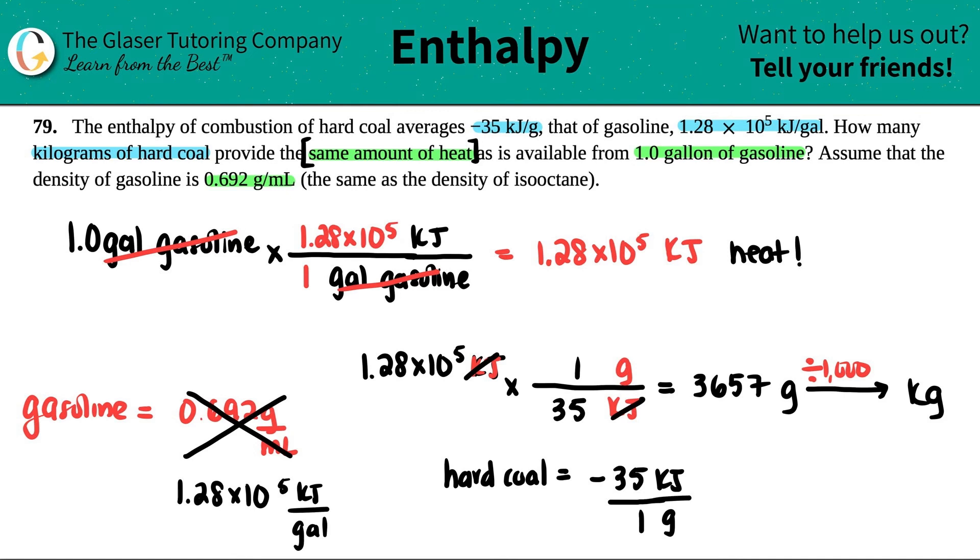So looks like 3.7. Now, I only say 3.7 because I'm looking at the sig figs here. I only see that there's two sig figs. That's the lowest number of sig figs. So we should technically have two sig figs if you want. So this would be 3.7 kilograms. And that's how many kilograms that are needed for the hard coal.